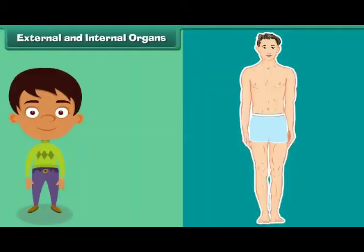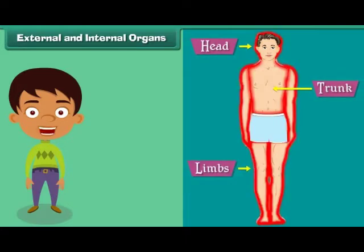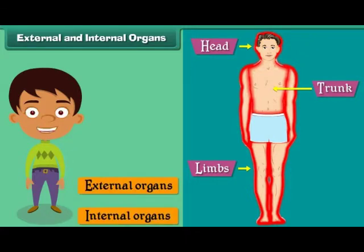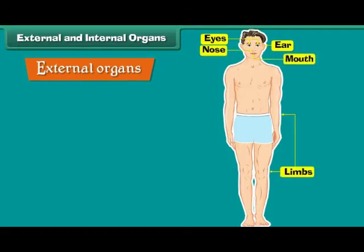External and internal organs. Each of the three main parts of the human body bear many organs. These organs may be classified as external organs and internal organs. The organs that can be seen from outside are called external organs. For example, eyes, ears, nose, mouth and limbs.